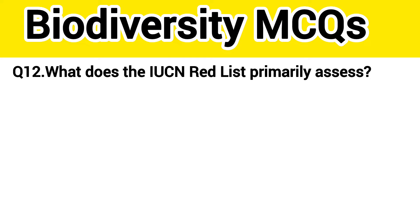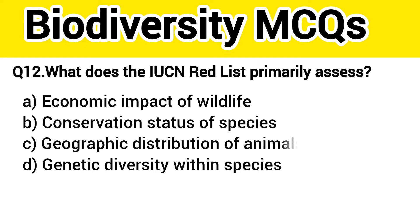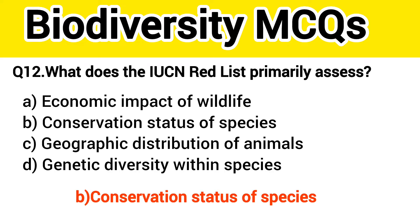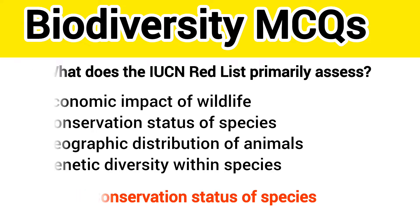Question number 13. What does the IUCN Red List primarily assess? The right answer, option B: Conservation status of species.